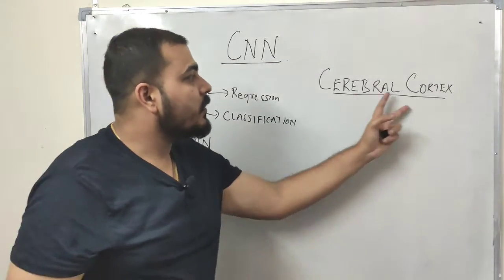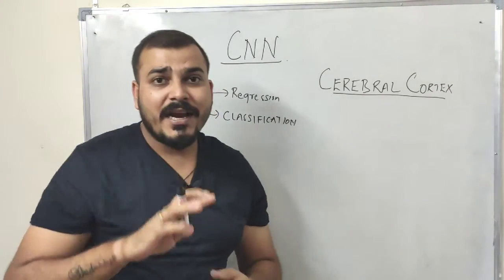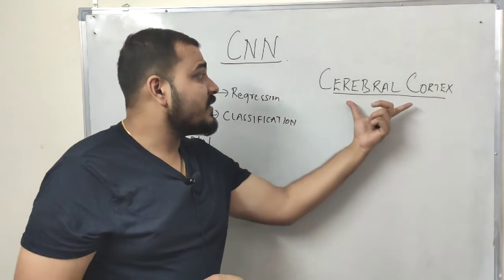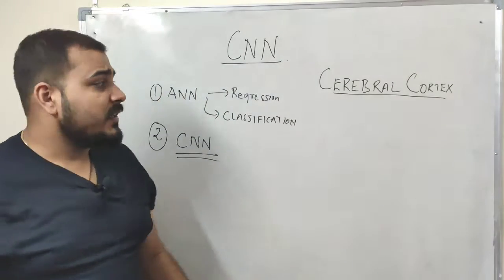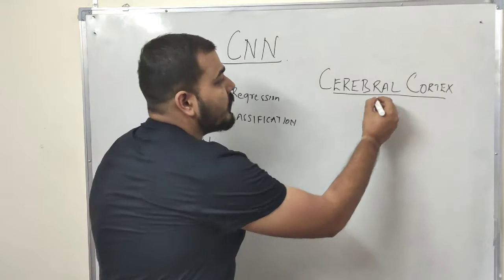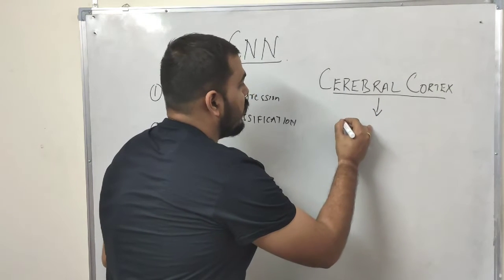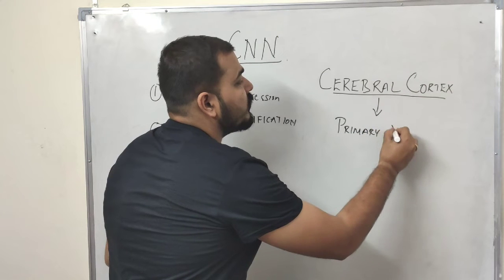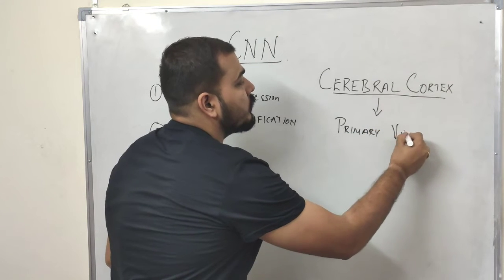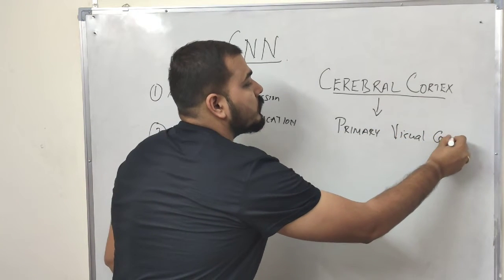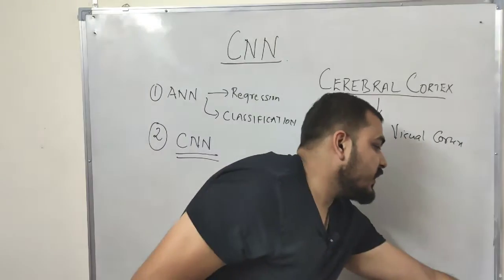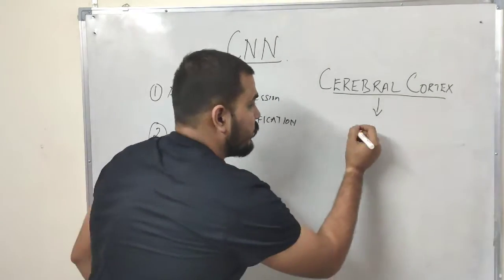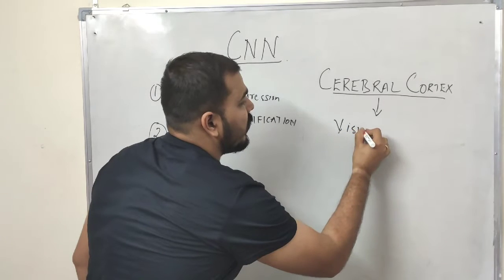we basically have something called the cerebral cortex. The human brain is divided into four parts and one of those parts is called the cerebral cortex. Inside this you have something called the visual cortex.